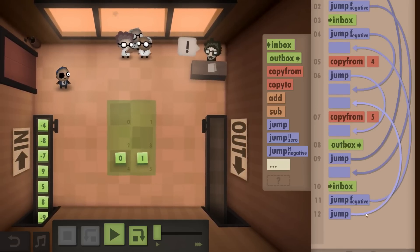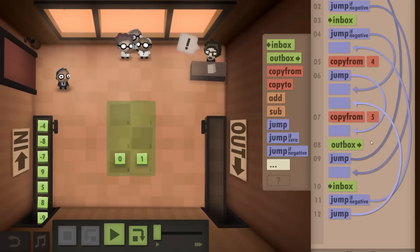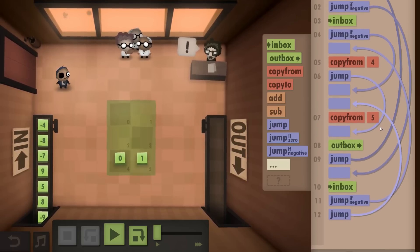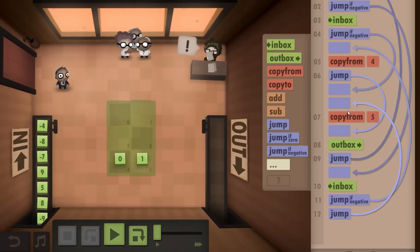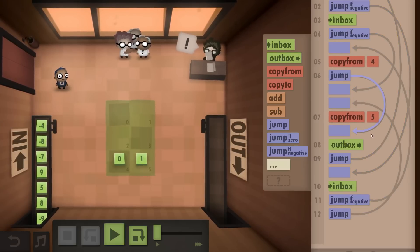And essentially, you just have to make sure if you want to meet the size challenge that you only have one Outbox command and that you only have one of each copy command and then you have to manage your jumps correctly.